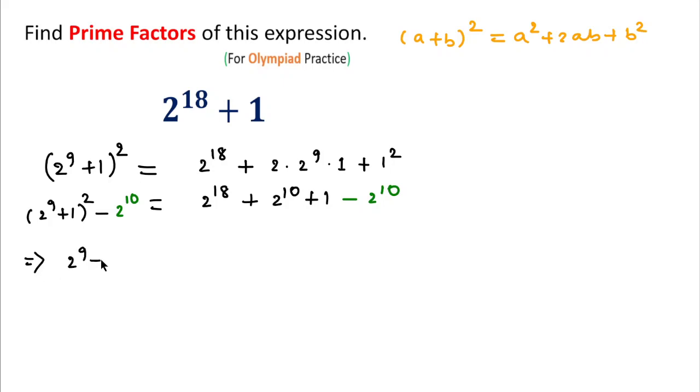(2^9 + 1)^2 - (2^5)^2 = 2^18 + 1. So according to our question, we can write this. After expanding this expression, you will get...